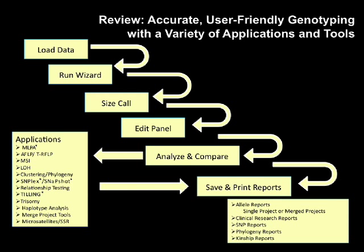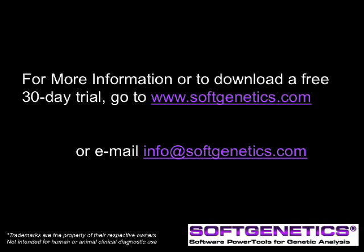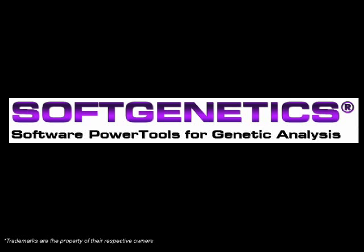Thank you for participating in this GeneMarker webinar covering importing data and file compatibility, setting run parameters and saving a run template in the Run Wizard, confirming size calls and calibration, basic features of the panel editor, linked navigation and analysis review, and saving and printing projects and reports. Additional features of GeneMarker include a variety of applications, tools, and specialized reports, which are covered in separate webinars. For more information or to download a free 30-day trial program, go to www.softgenetics.com or email us at info@softgenetics.com.